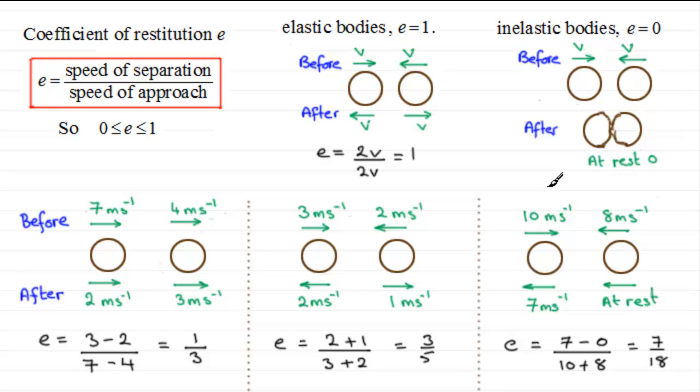And for this one, where we've got inelastic bodies, e would be equal to the speed of separation. Well, that's clearly zero. And we're dividing that by the speed of approach, that would be v plus v, 2v. But zero divided by 2v comes out to be zero, agreeing with what we've got here.